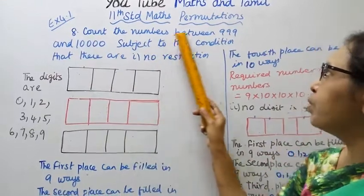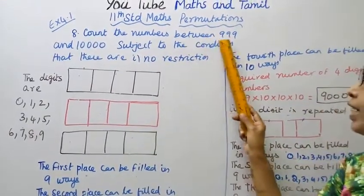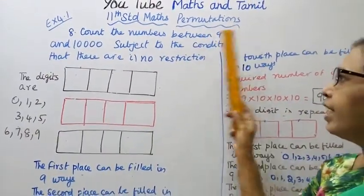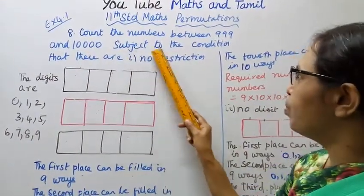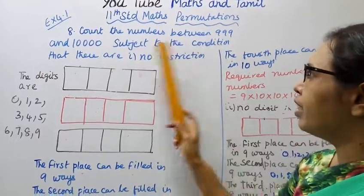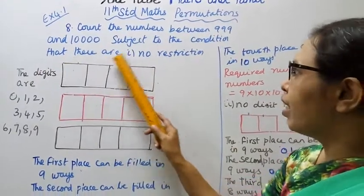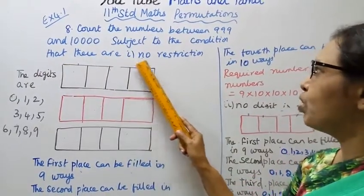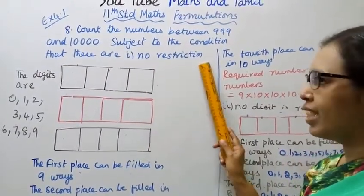Count the numbers between 999 and 10,000 subject to conditions. The first condition is: no restriction.